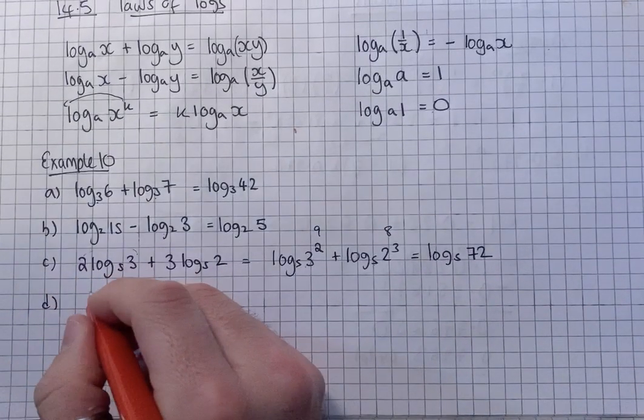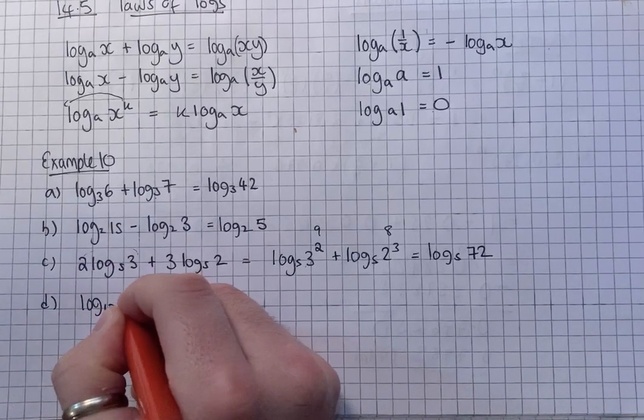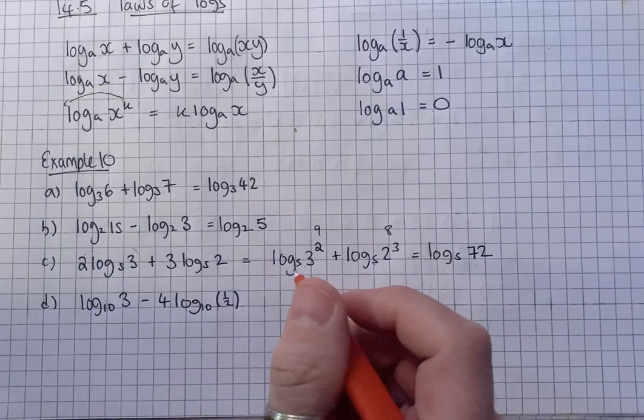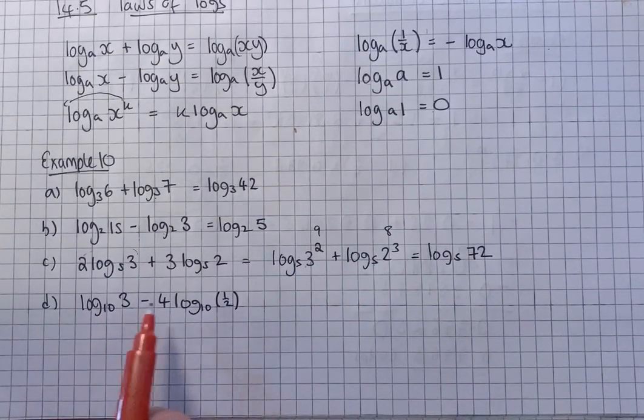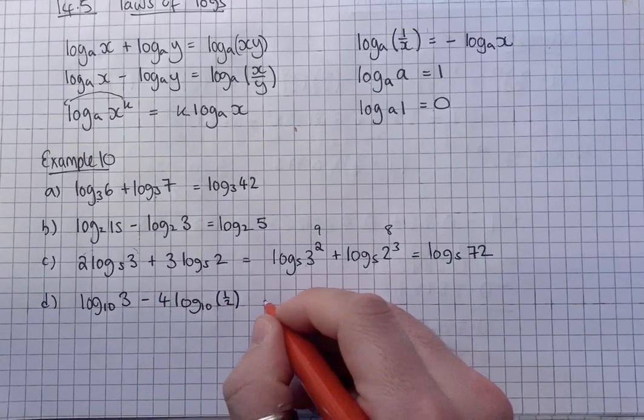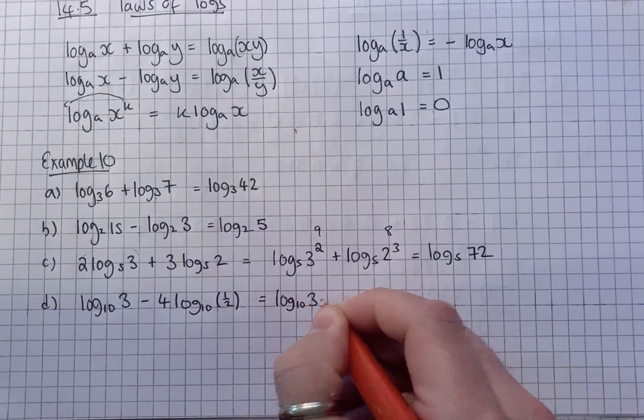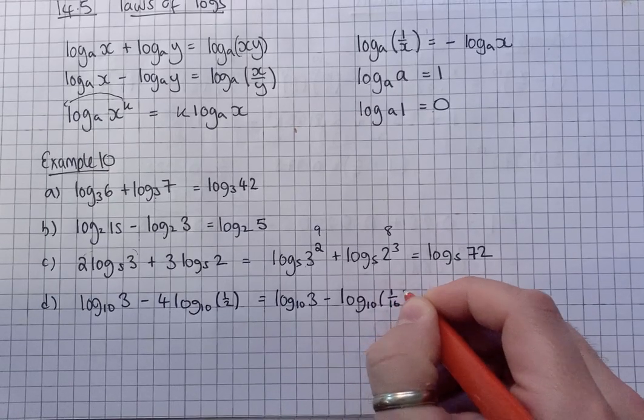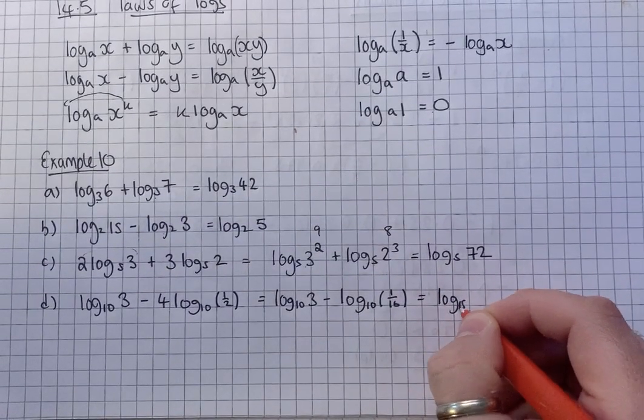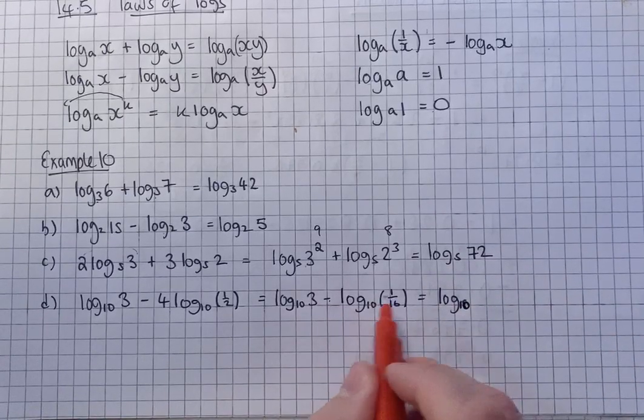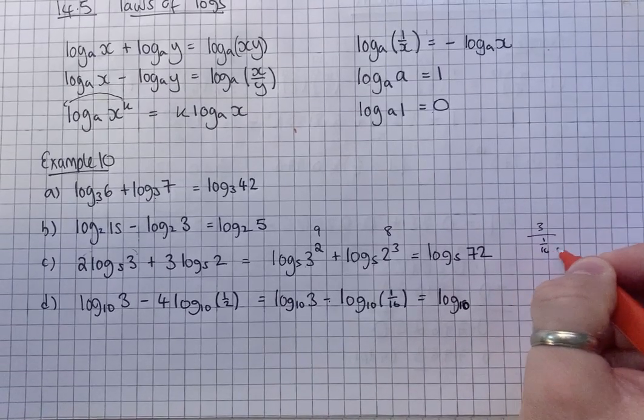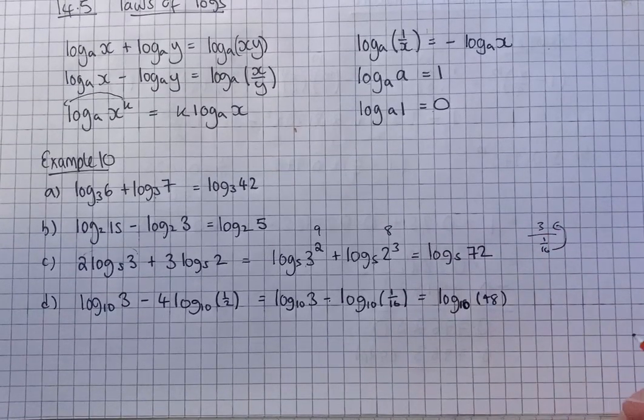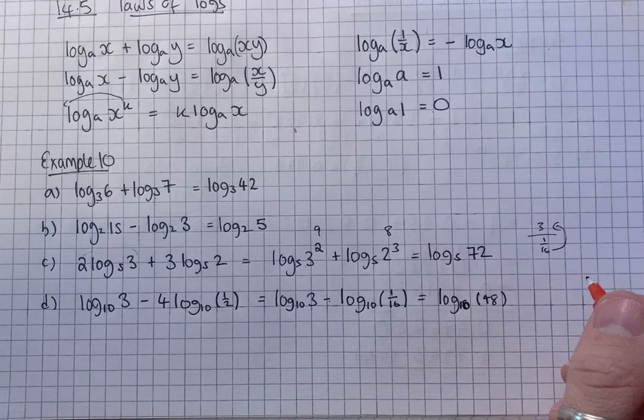D is one more. Log to the base 10 of 3, minus 4 log to the base 10 of 1/2. So similar for this one. You've got log at the start. I haven't got log at the start, so this needs to wallop as a power. That's log to the base 10 of 3, minus log to the base 10, a half to the power of 4 is going to be a 16th. So now we can combine them. Log to the base 10. Subtract, so we divide. 3 divided by 1/16, 16 comes to the top, it's 48.